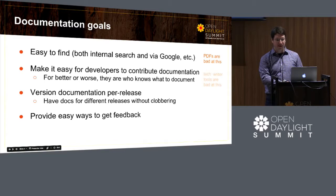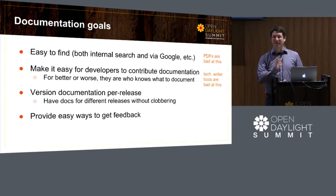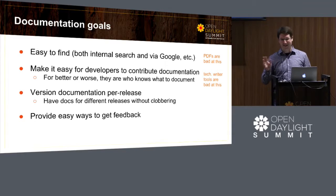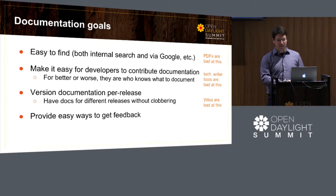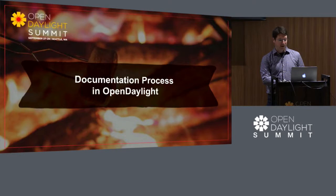PDFs are really terrible for findability. Tech writer tools are incredibly bad at getting developers to contribute — nothing makes developers hate you more than telling them to use weird proprietary DocBook editing tools. They're also really expensive. Wikis are really bad at accidentally overwriting versioned content. We're still working on how to get good feedback from people.